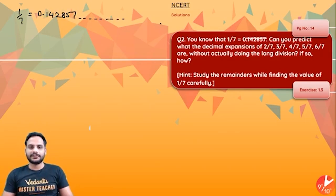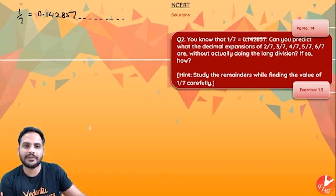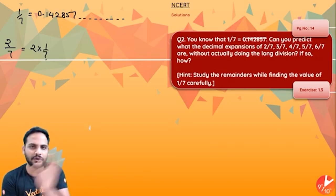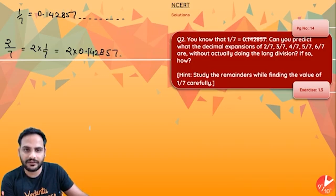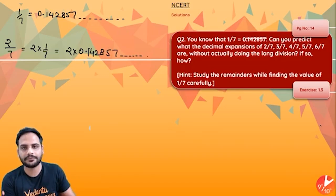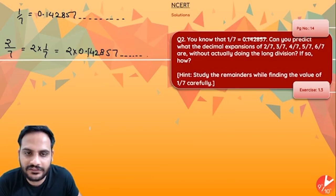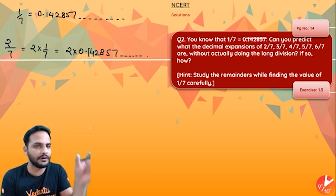Since the decimal repeats itself, let's see what happens if we multiply. 2/7 can be written as 2 times of 1/7, which is 2 times of 0.142857 repeating. When the division reaches remainder 1 with no further remainder, the whole pattern will continue to repeat itself.